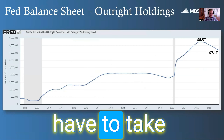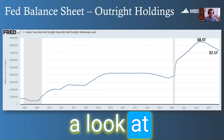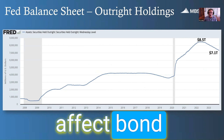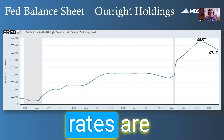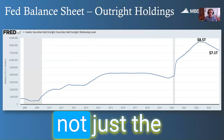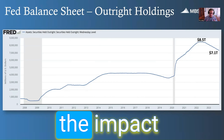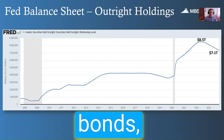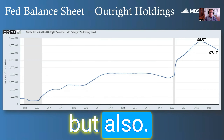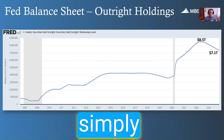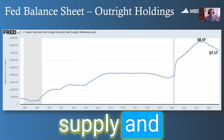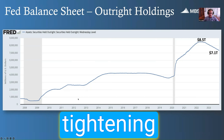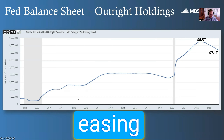The other thing we have to look at in terms of what's going to affect bond yields and mortgage interest rates is not just the Fed funds rate and the impact of inflation on those bonds, but also the Fed's balance sheet — simply supply and demand. The Fed can do something called quantitative tightening or quantitative easing.